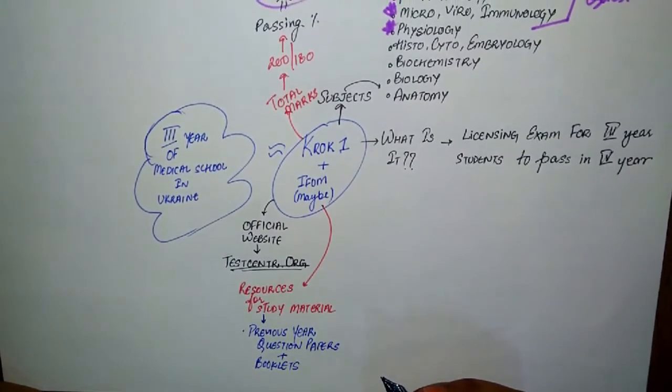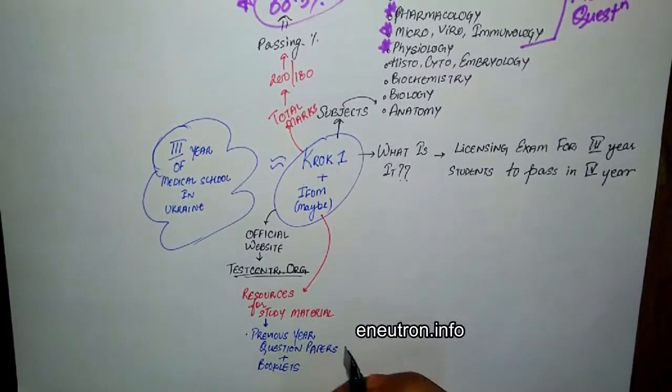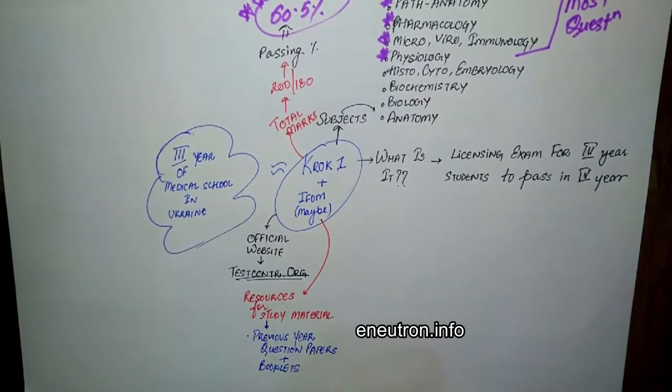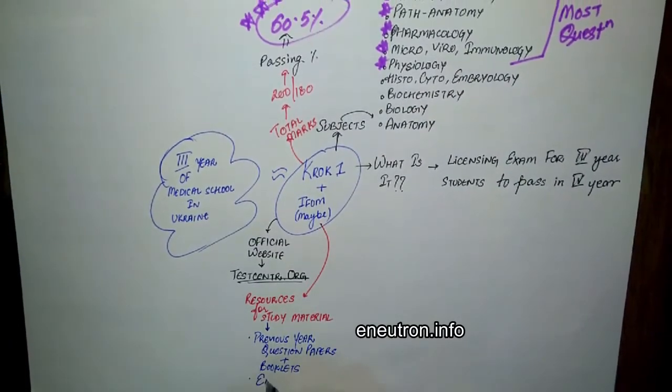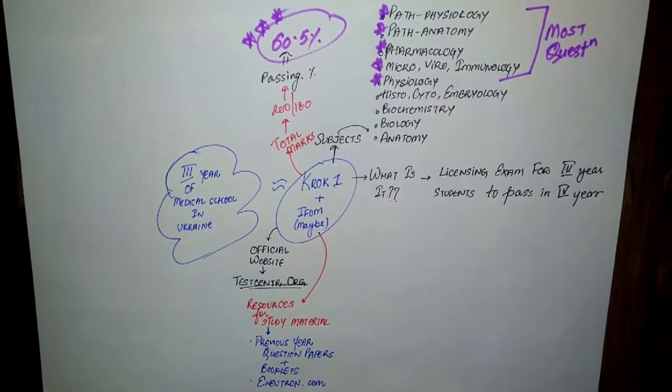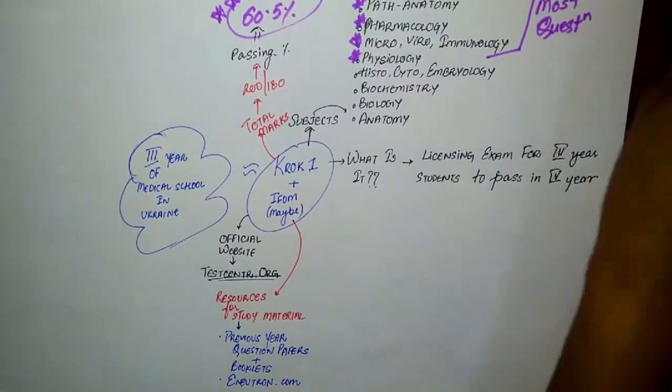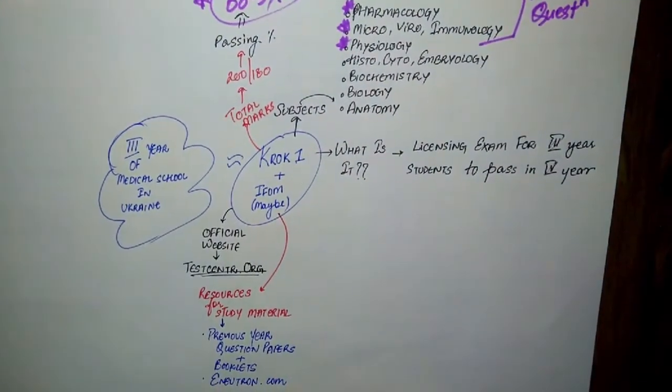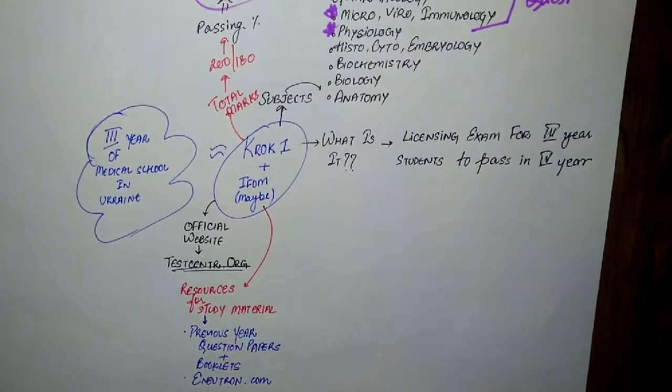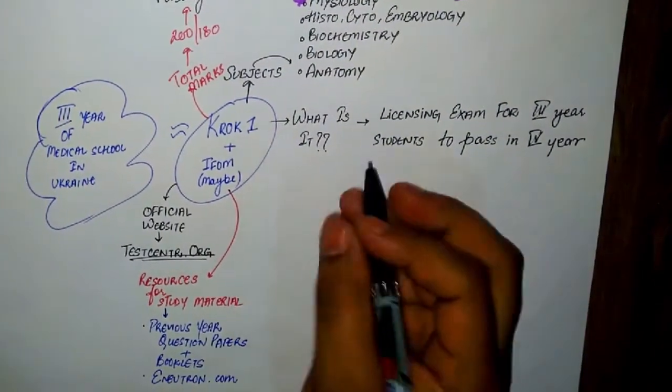I recommend a website called e-neutron.info. This is a free website and you don't need to make an account. You will find previous year papers and booklets from many years and can practice those questions online. This website works in offline mode as well, so you don't need internet after starting your question paper.